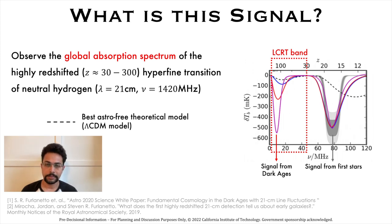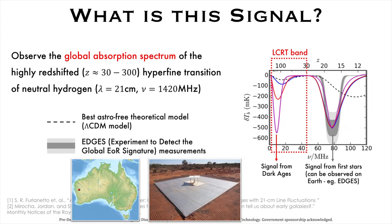The dotted line is the best theoretical cosmological model of the early universe without any astronomical sources like stars or galaxies. Recent measurements using the EDGES instrument in Australia have constrained the signal from the dark ages.